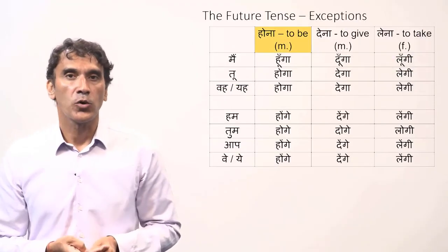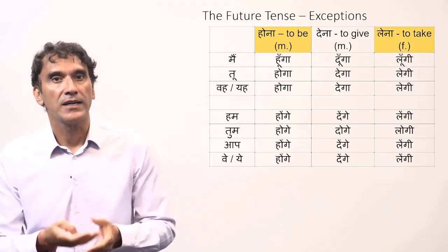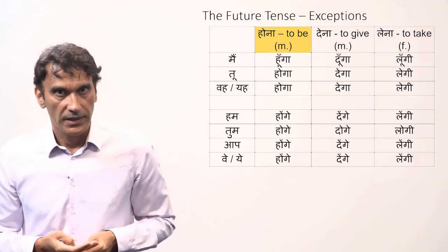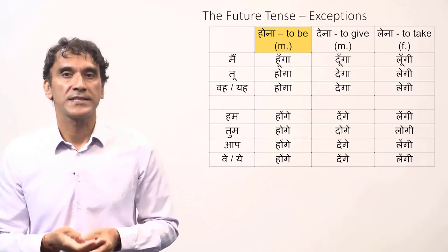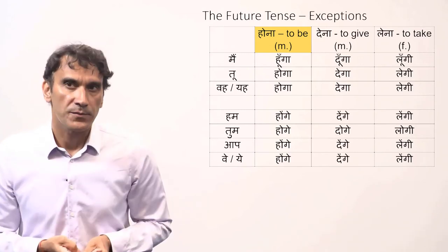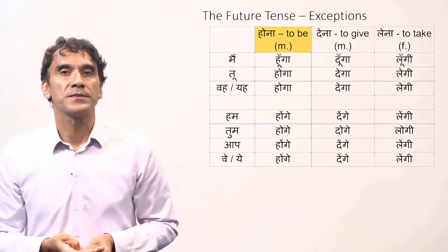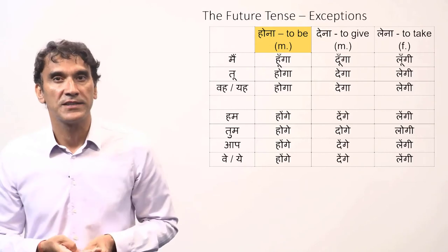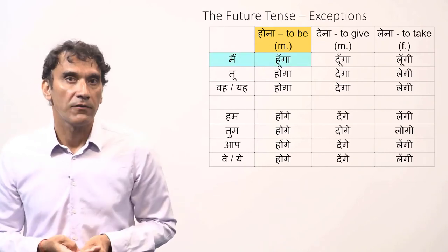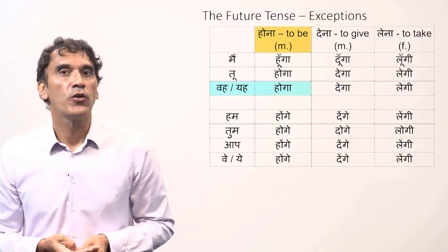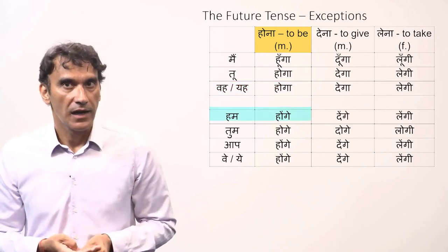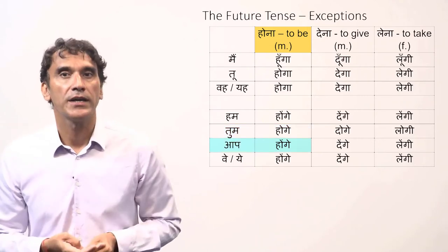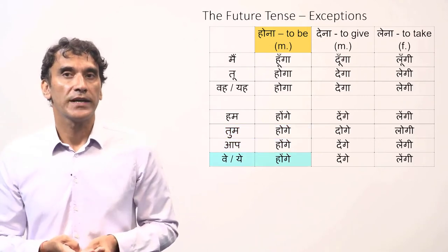There are a few verbs such as 'hona' (to be), 'lena' (to take), and 'dena' (to give) that are exceptions to the rule for the future tense. For 'hona,' taking only masculine forms — for feminine, simply change 'ga' or 'ge' to 'gi': 'main hunga' (I will be), 'tu hoga' (you will be), 'wo/ye hoga' (he will be), 'hum honge' (we will be), 'tum hoge' (you will be), 'aap honge' (you will be), 'we/ye honge' (they will be).